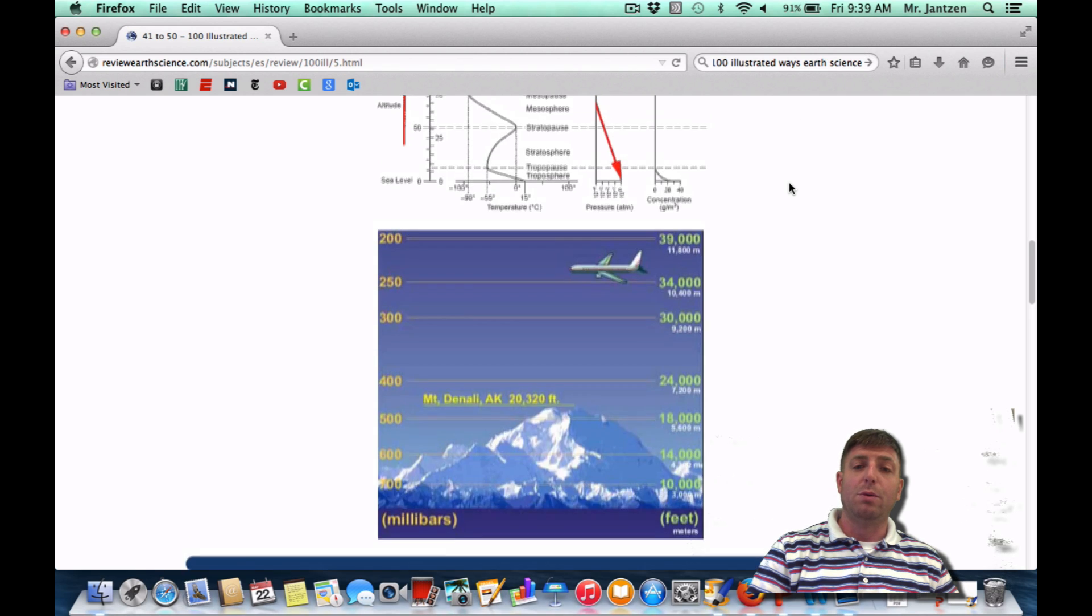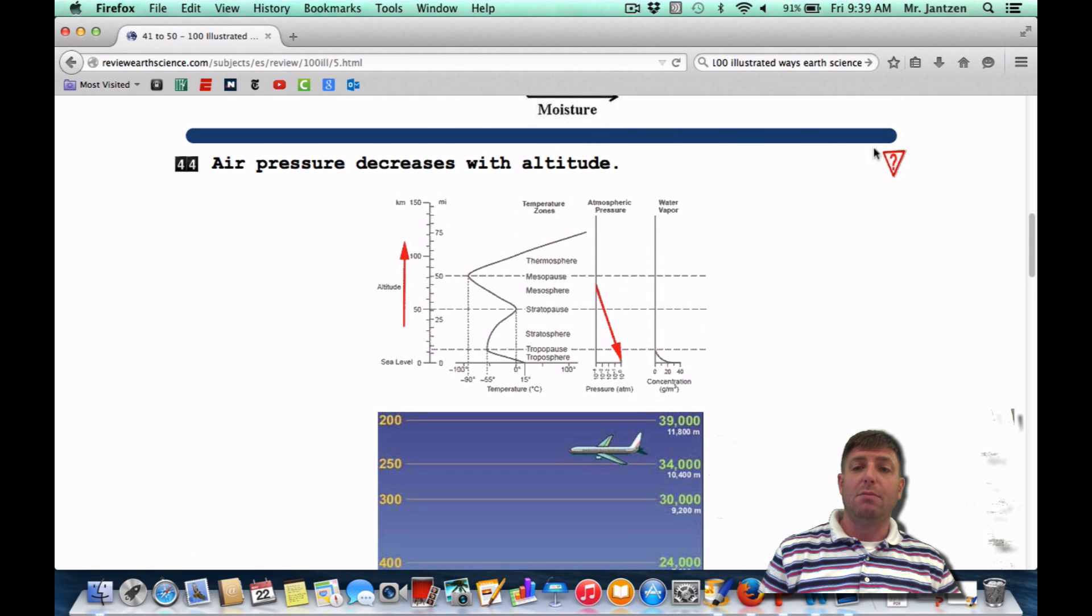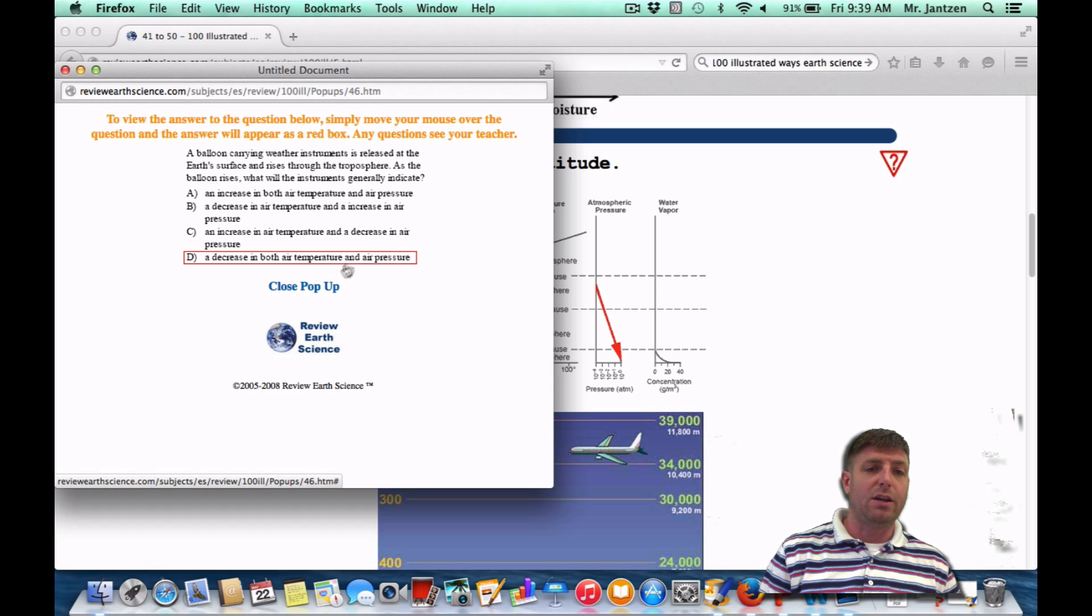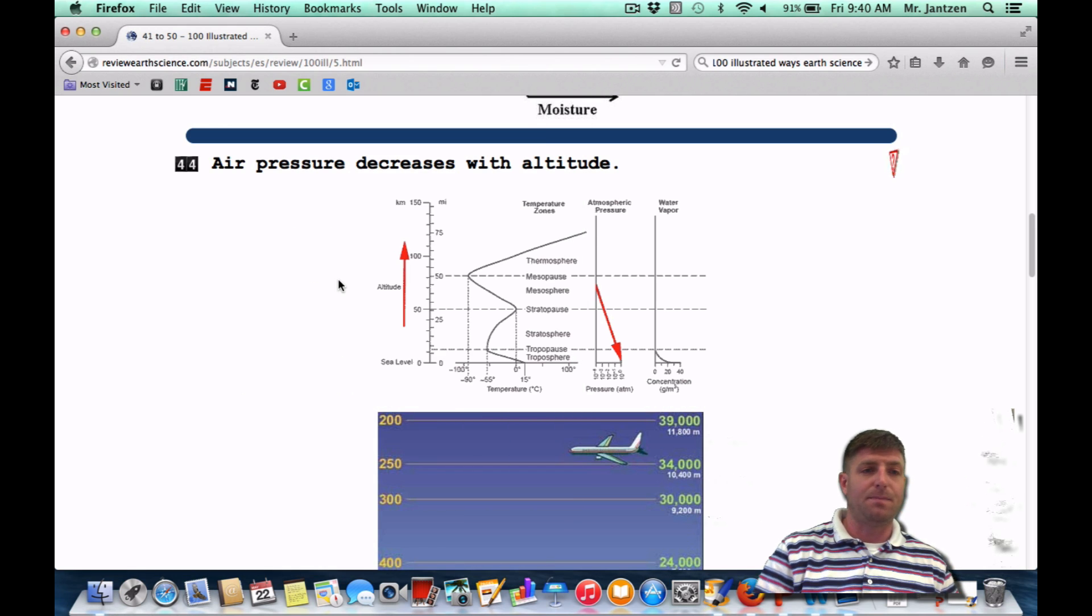If we were going to see this as a region's question, it may appear something like this. A balloon carrying weather instruments is released at Earth's surface and rises through the troposphere. As the balloon rises, what will the instruments generally indicate? Well, as you're going up, it's going to get colder, like we talked about. And you're going to have less pressure because you're further from the surface of Earth. So we're going to go with D, decrease in both air temperature and pressure.